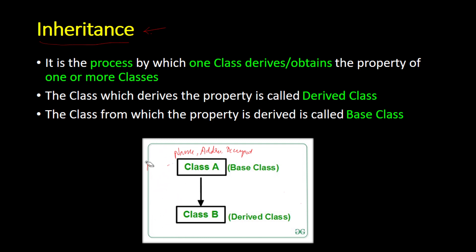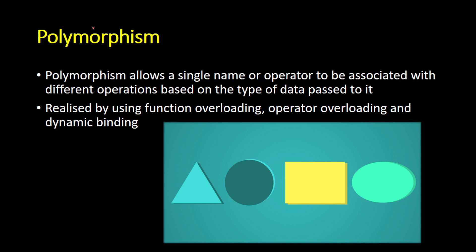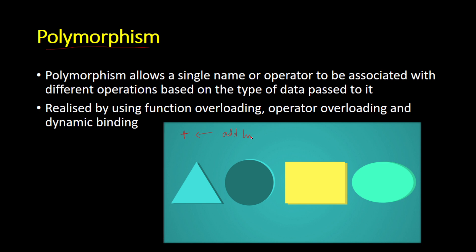You will understand inheritance better with actual programs in the future. The class from which data has been derived is called the base class, and the class to which the data is copied is called the derived class. Moving on, the next important concept is polymorphism. Let's take the example of the plus operator — its usual functionality is to add two numbers.